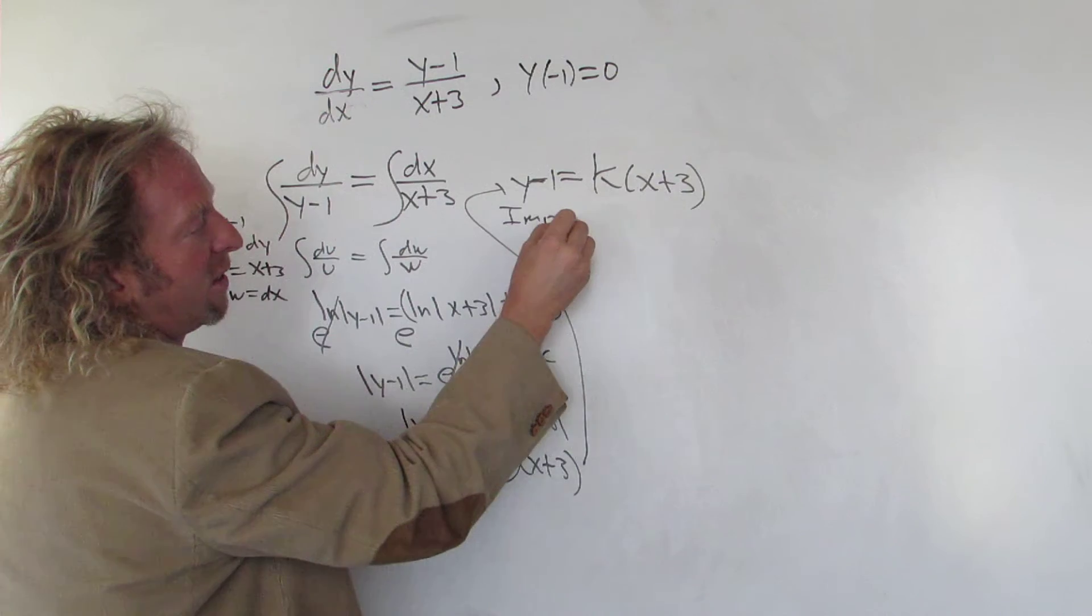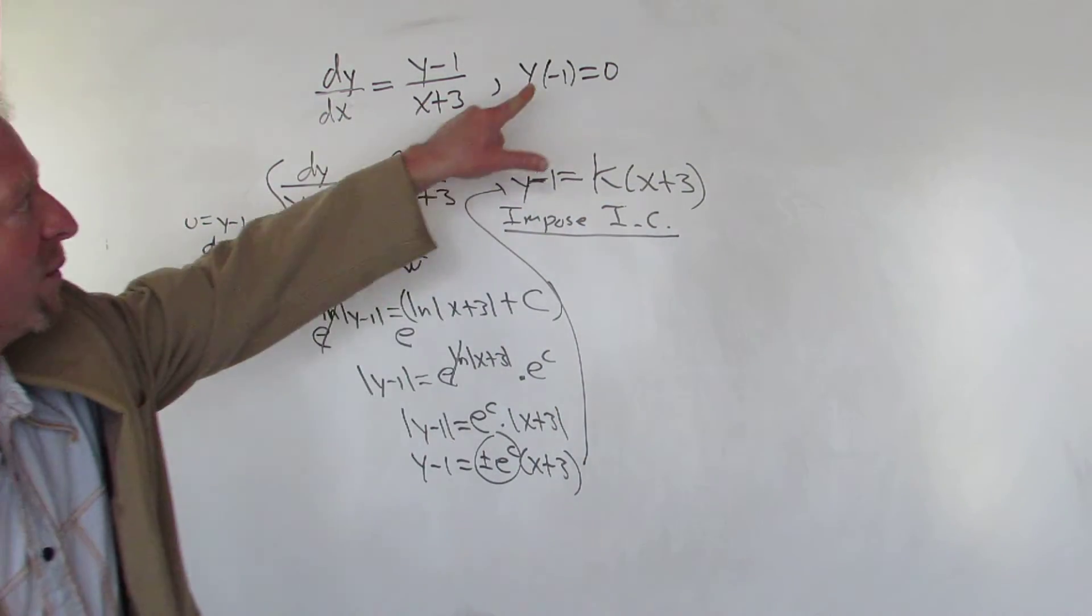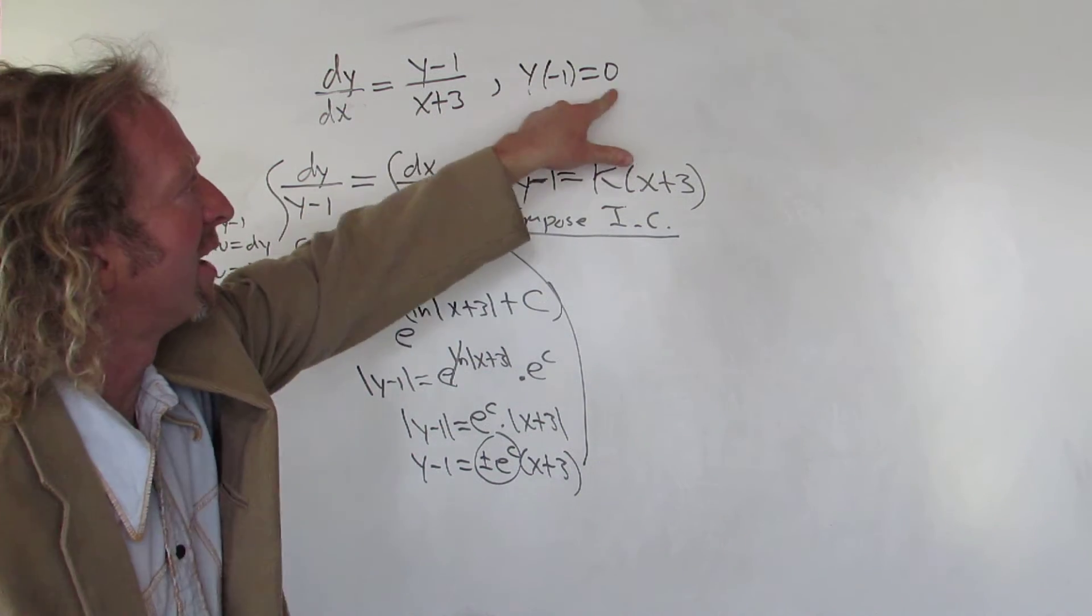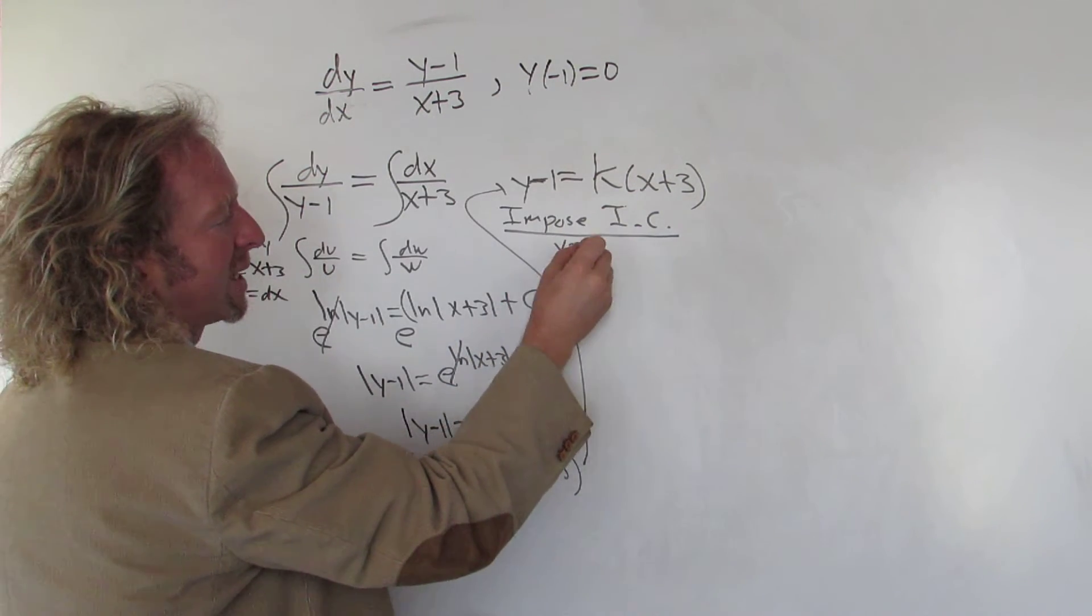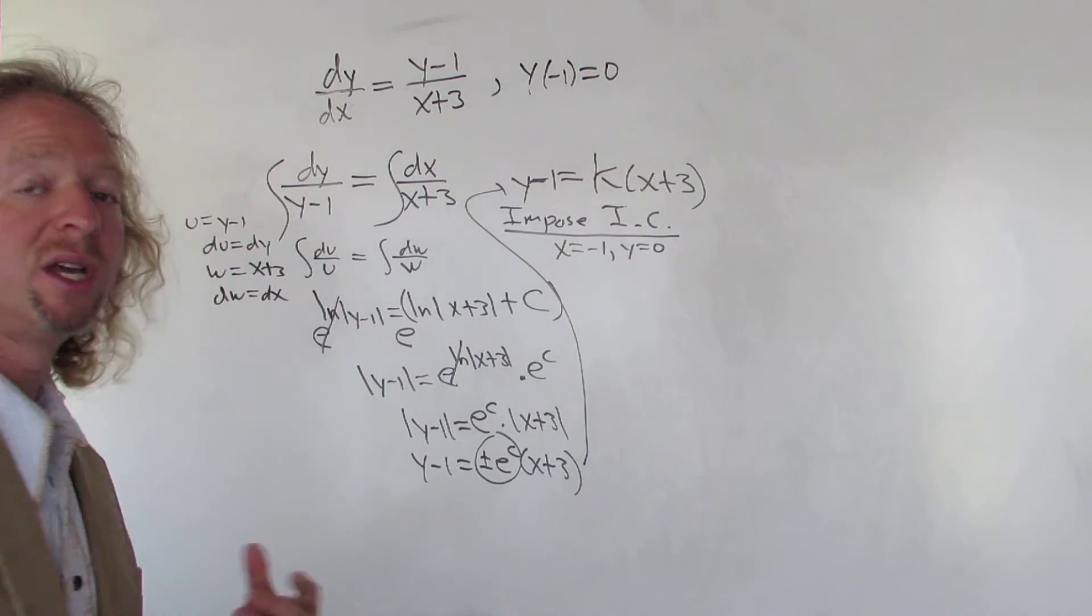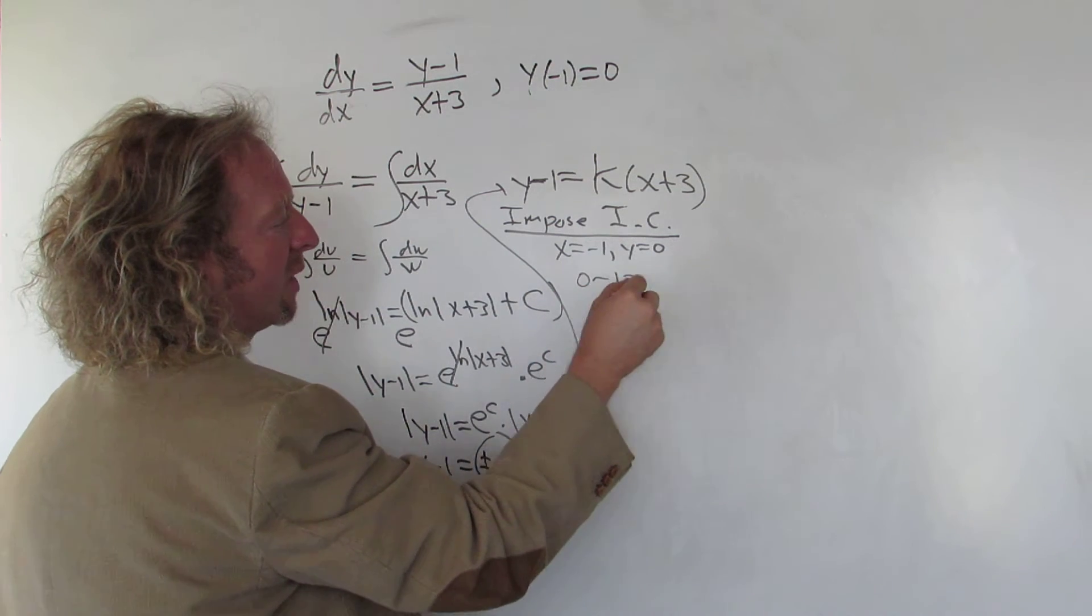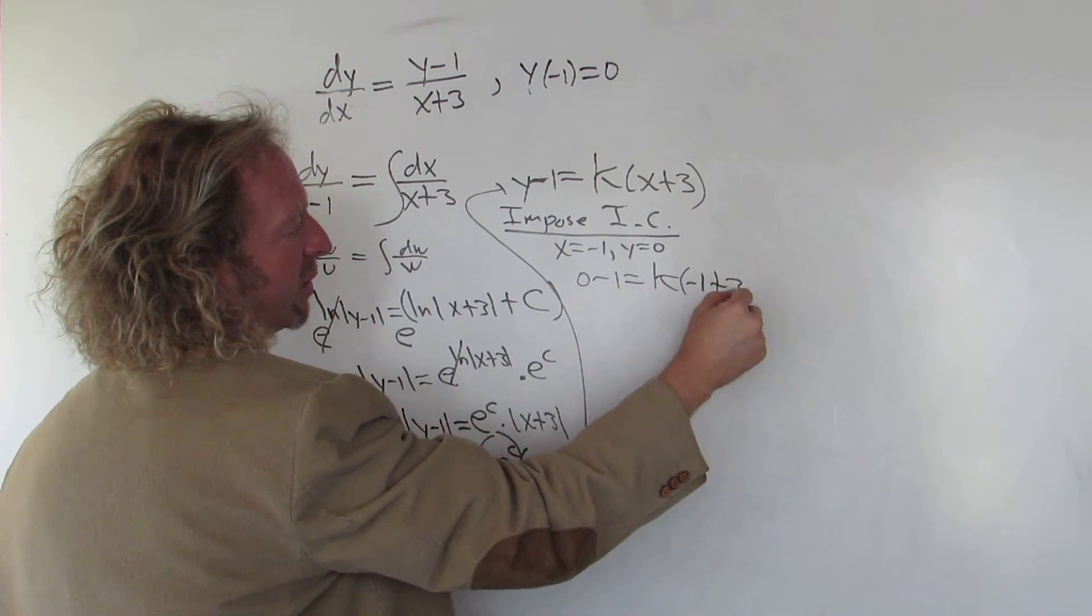We're going to impose the initial condition. The initial condition says that when x is negative one, the y value is zero. So we're just going to make that substitution into our equation. This will be zero minus one equals k times negative one plus three.